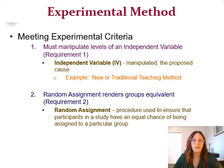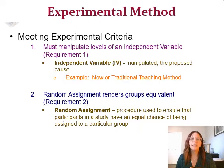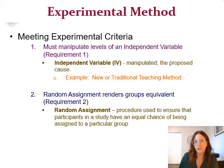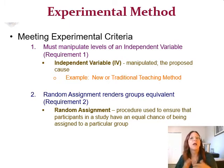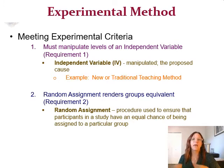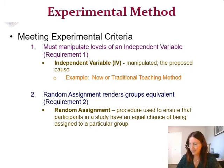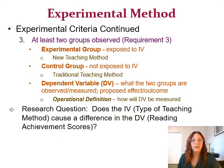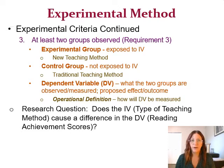The second criteria is random assignment — every person in the study should have an equal chance of being in either the new teaching method group or the traditional teaching method group. It shouldn't be that the researcher likes certain people so they go to one group. It has to be equal assignment, equal chance of being assigned to either one. Random assignment is used for a true experimental method. And the third criteria is that there are at least two groups observed.